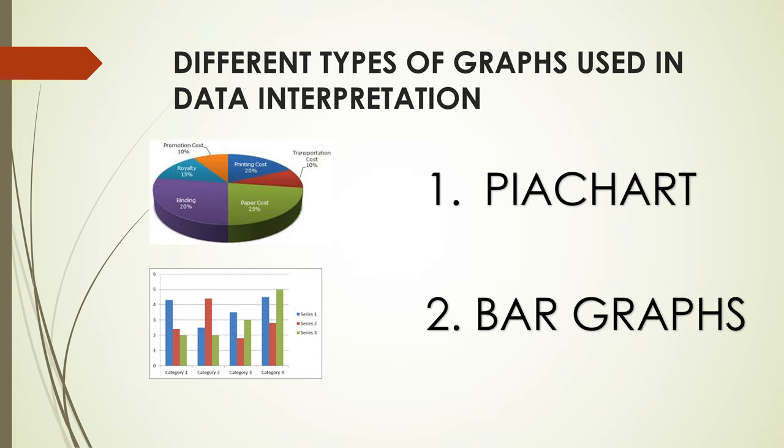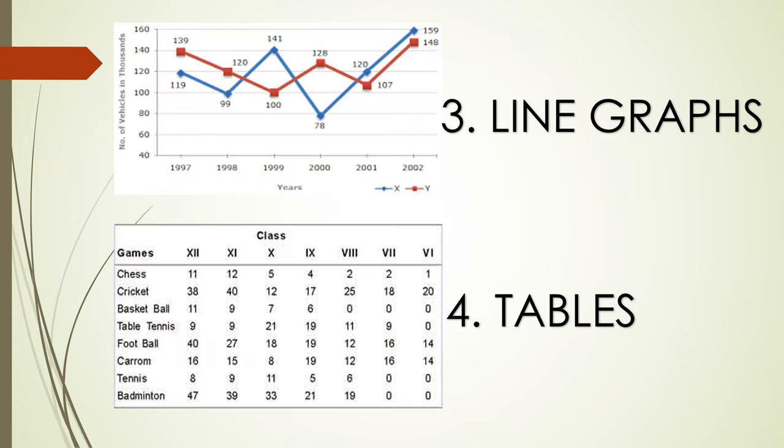Next is bar graphs. Bar graphs are graphs in which we use different colored bars to show different data or information. The third type is line graphs. In these graphs, we take different colored lines to compare different information.